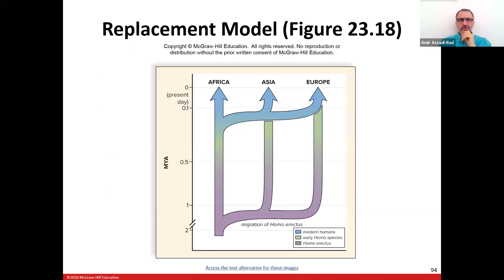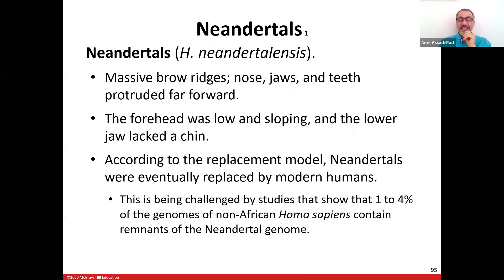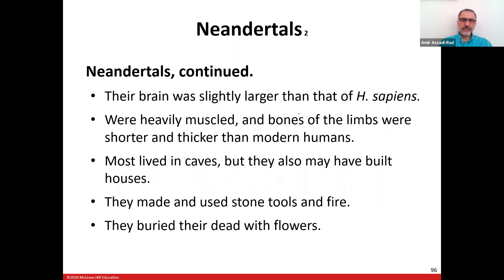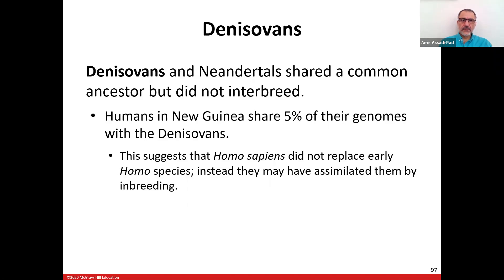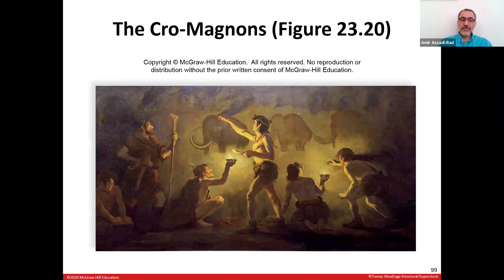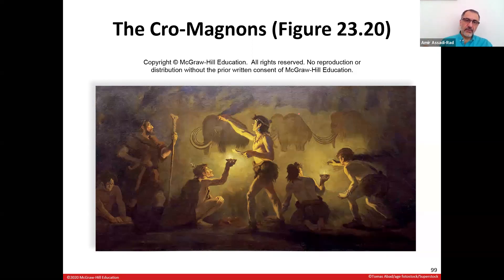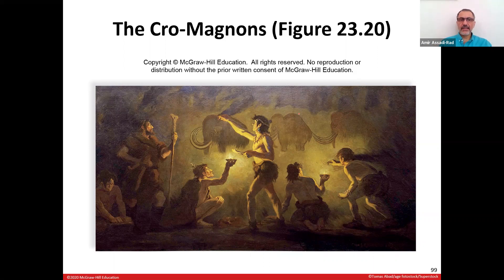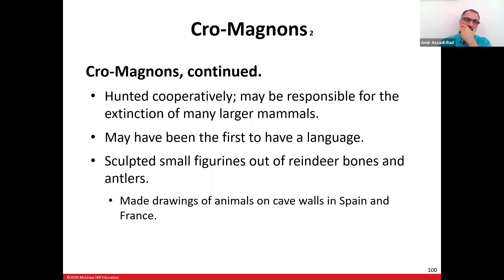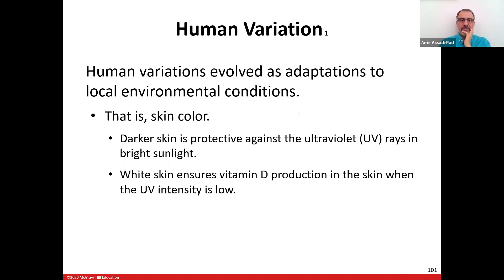The replacement model and Neanderthal man are discussed briefly. Neanderthals did not interbreed with modern humans. Cro-Magnons are the most modern people — they lived in caves, used tools effectively, and drew the cave paintings we see today. They hunted cooperatively. The ice age movies depict early Cro-Magnons.